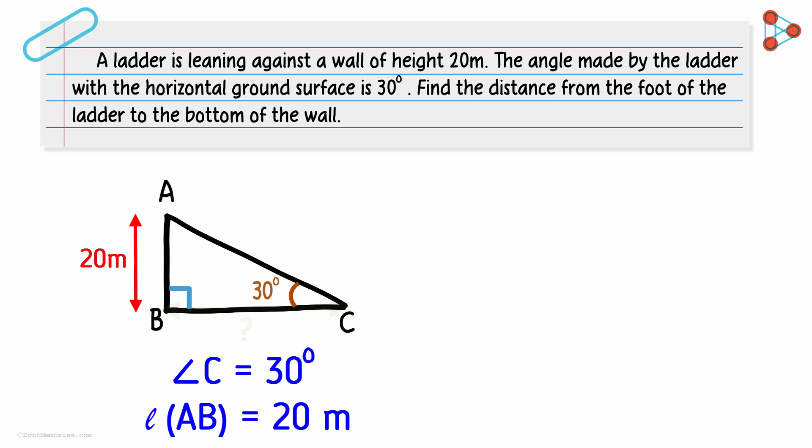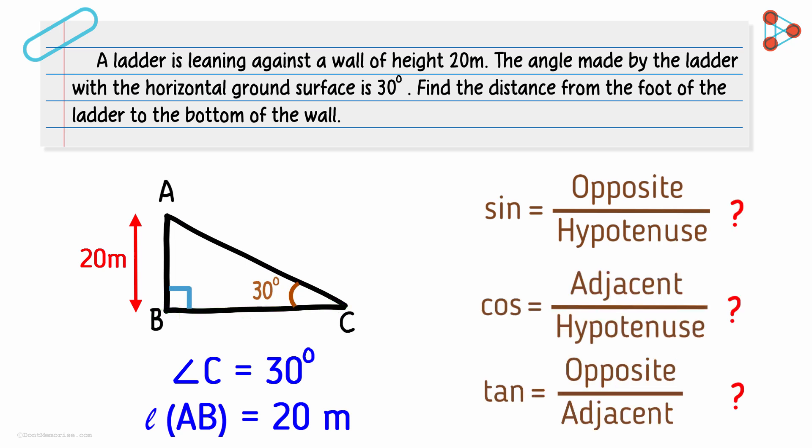We are asked to find the length of BC. Which trigonometric ratio will we use here? Sine, cosine, or tan? BC is the side adjacent to angle C and that's what we are interested in. Now let's understand this well.